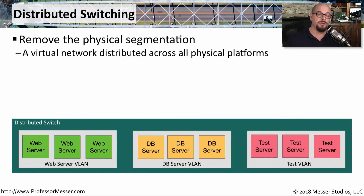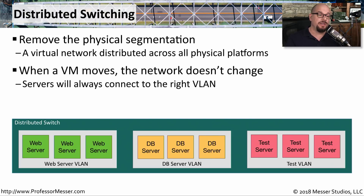One way we're able to handle this is to provide distributed switching, which virtualizes the networking so that we can group individual services into their own VLAN regardless of where the actual virtual machine happens to live. This means that if one web server moves from one virtualization platform to another, our networking configuration doesn't change at all, and there's no impact to communication or connectivity because this all runs in the distributed switching environment.